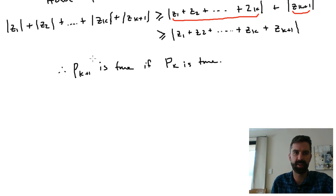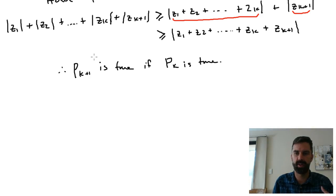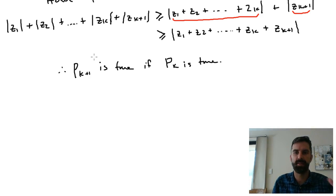Because you can prove it for two complex numbers using vector geometry or by letting them equal a + bi, any sort of technique like that, and then you can apply that to your generalized inequality.